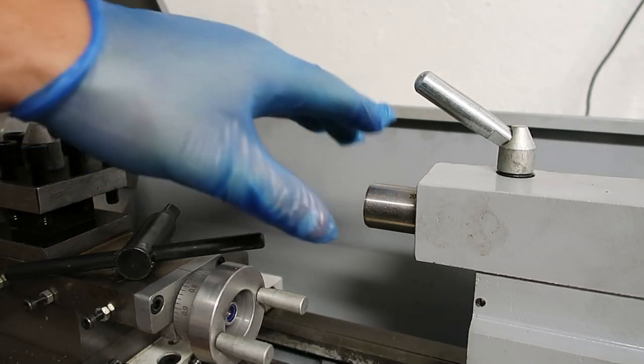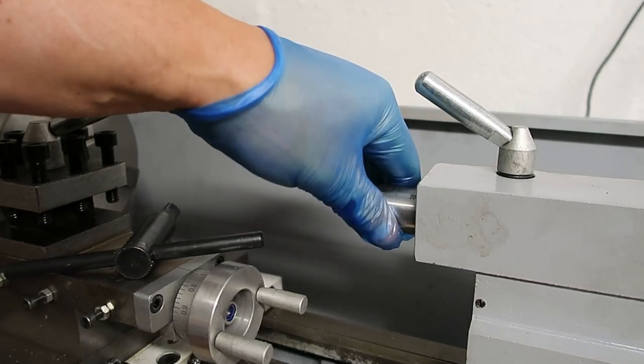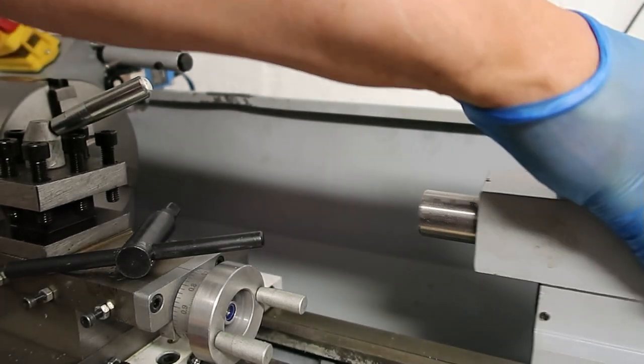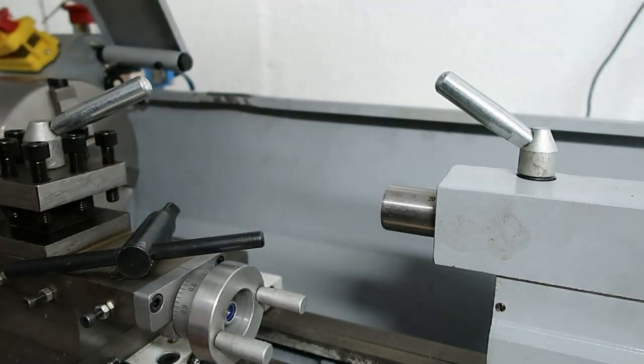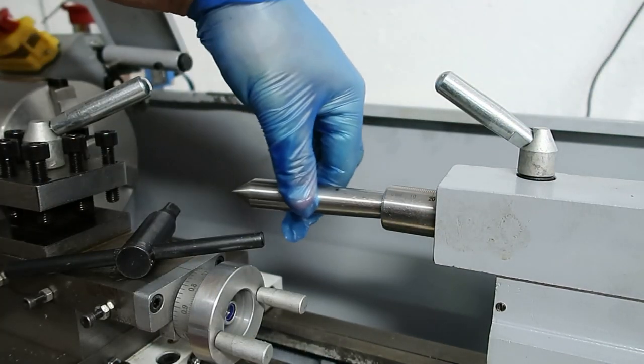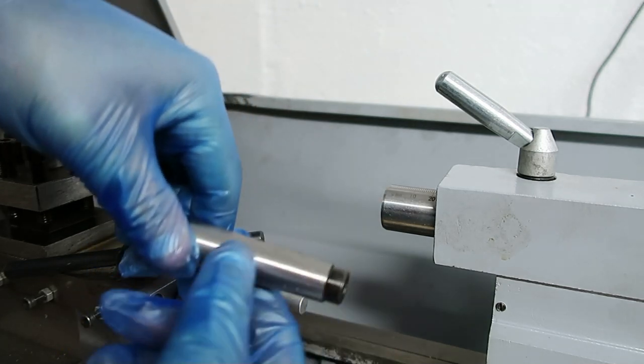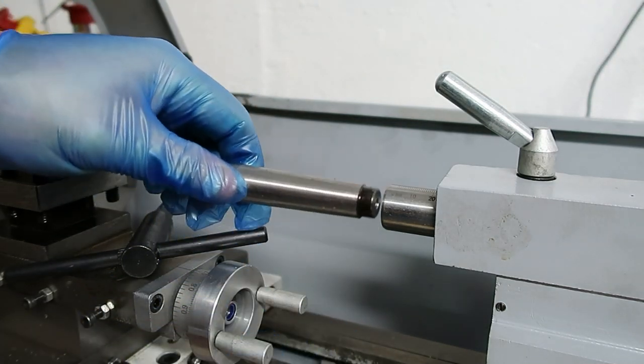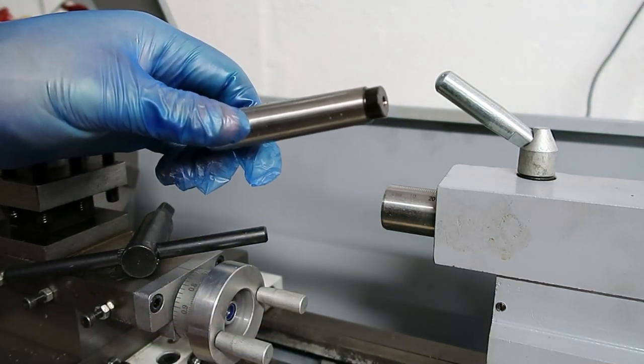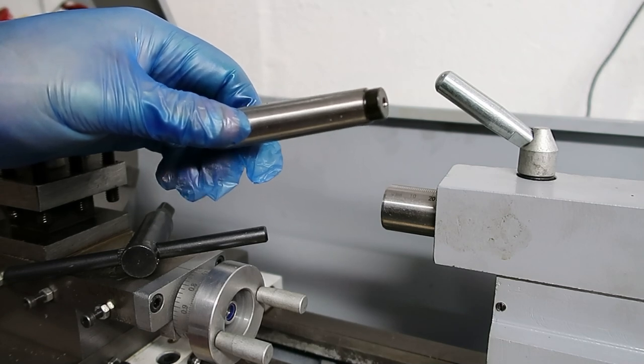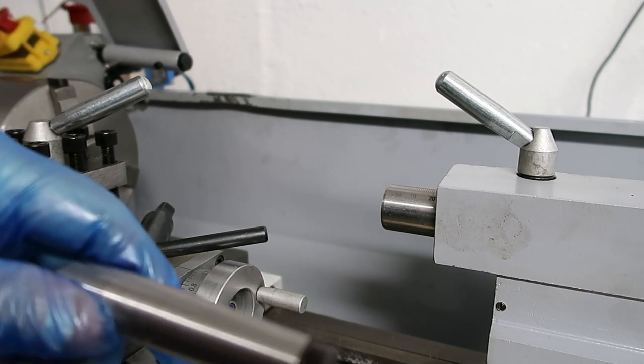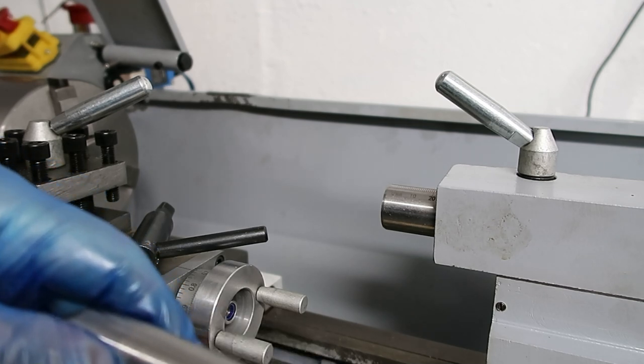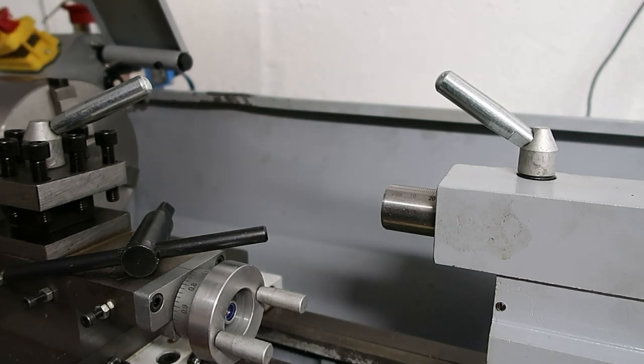So just a few more things about fittings for the tailstock. The thing comes with a dead center. This taper, by the way, is an MT2. I don't think MT is metric taper. So you can get sleeves which are MT2 to MT1, but obviously you can't go from MT2 to MT3.